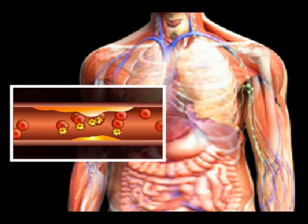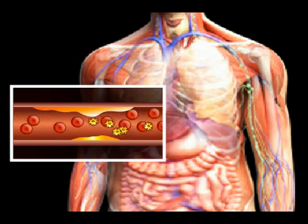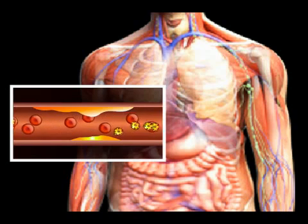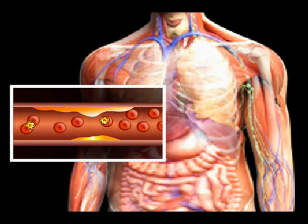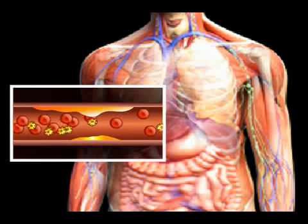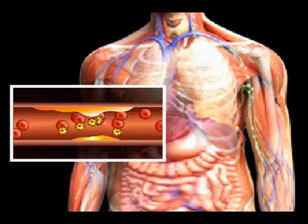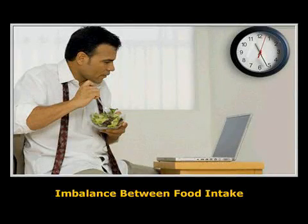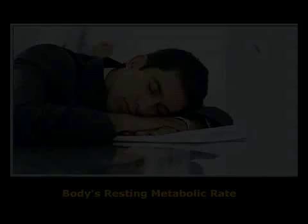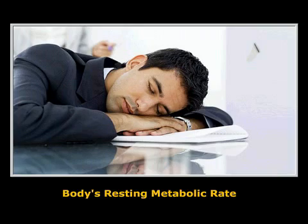Obesity often results when the size or number of fat cells in a person's body increases. Starting as an increase in size, these fat cells move on to increase in number when a person gains weight. Causes for obesity include an imbalance between food intake, exercise, and the body's resting metabolic rate.